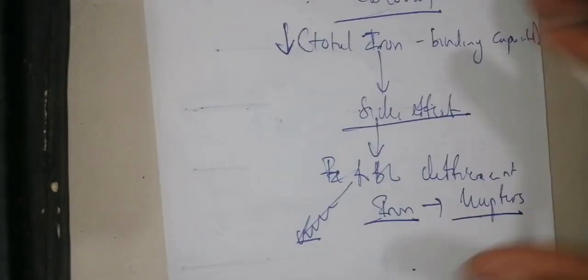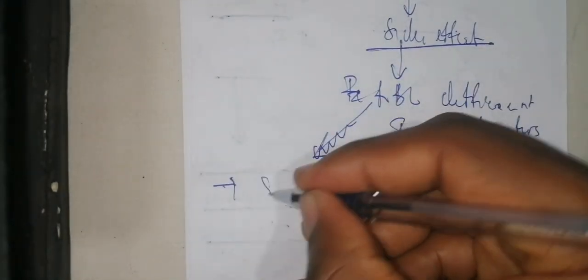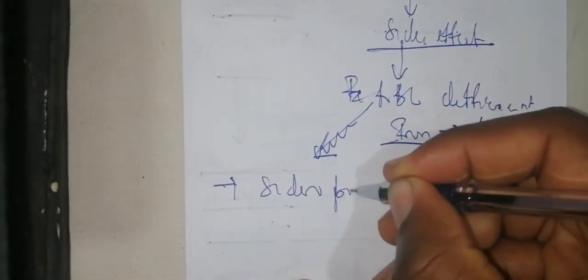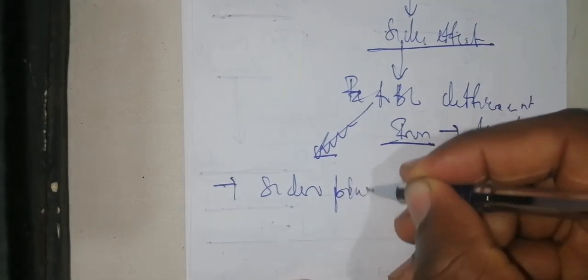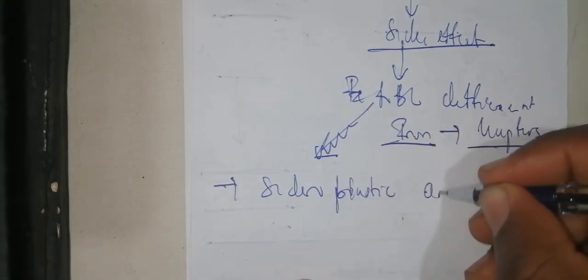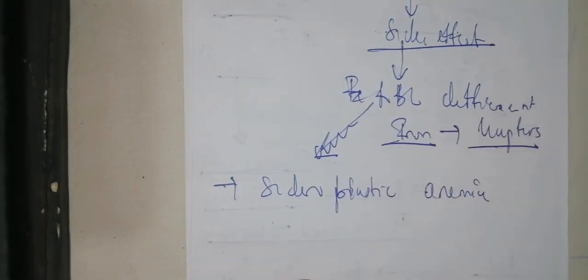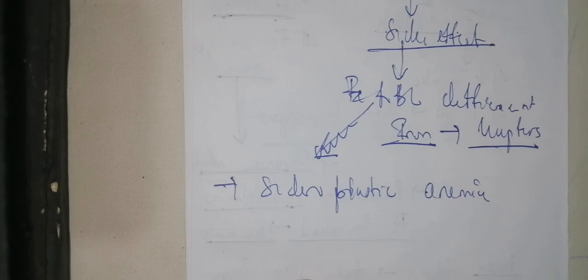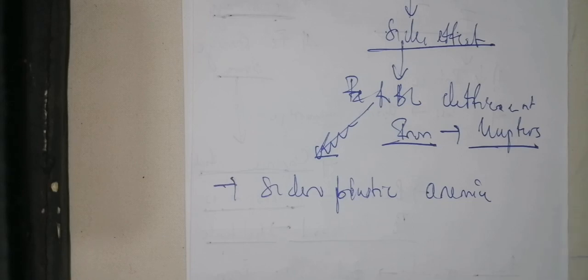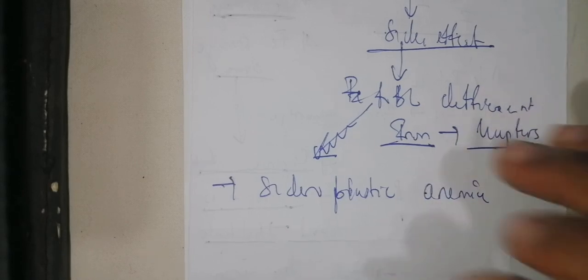After iron metabolism disorders, another microcytic hypochromic anemia to know is sideroblastic anemia. Those are the different anemias associated with microcytic hypochromic presentation and iron metabolism disorders.